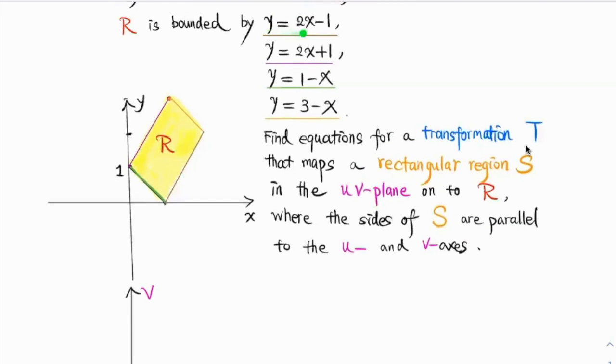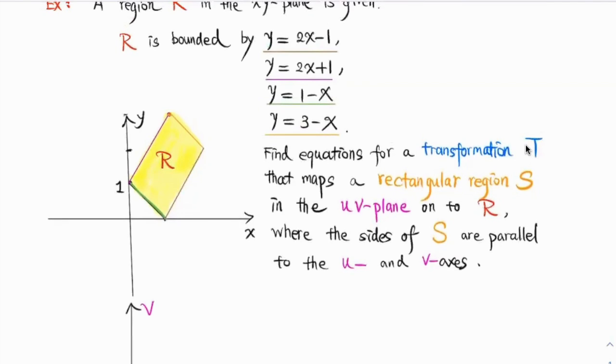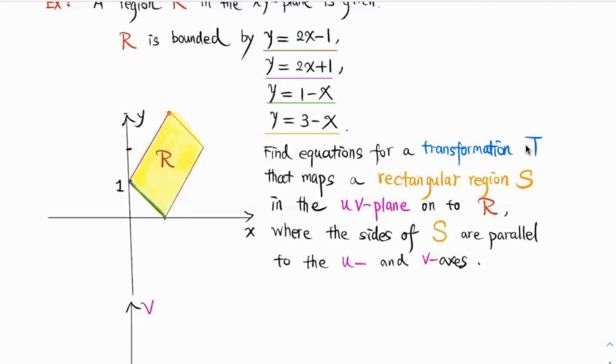First of all, this equation over here, Y equals 2X minus 1. We want to rewrite this. We're trying to get a constant.